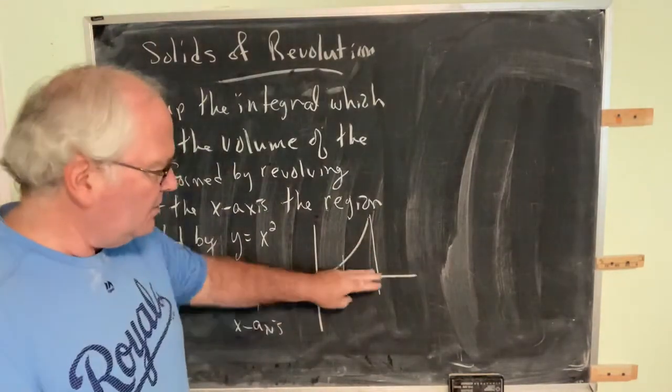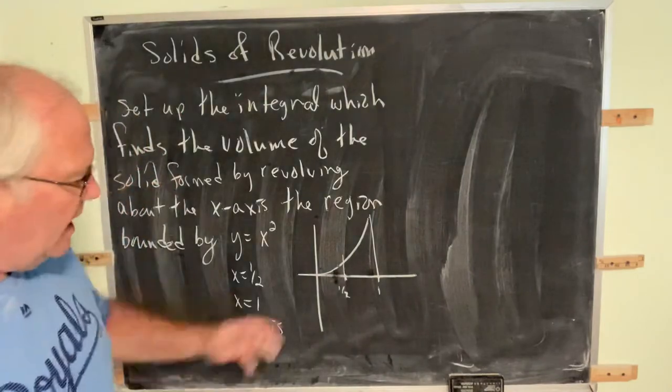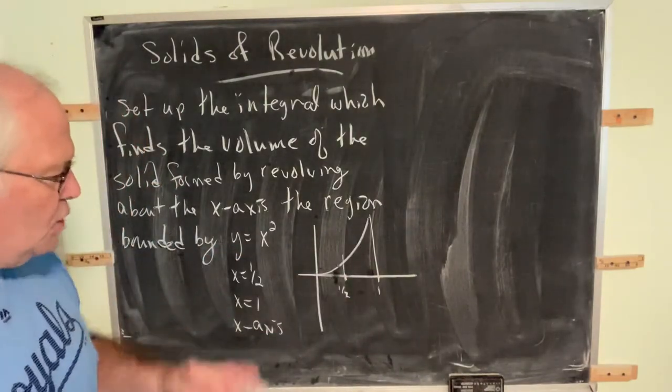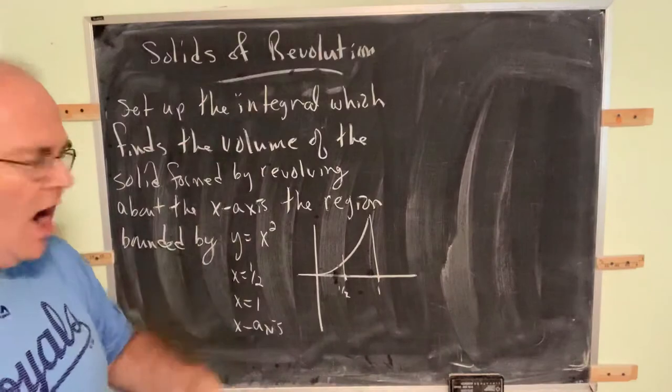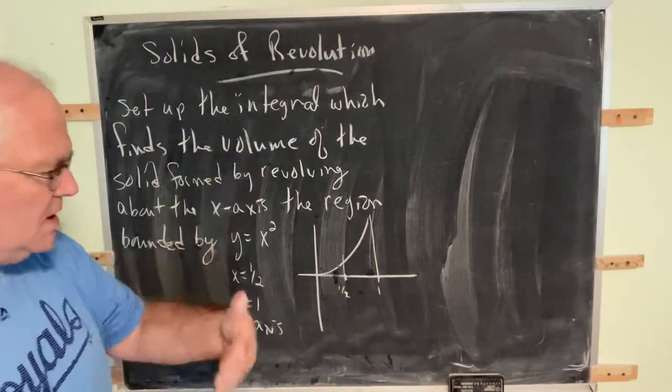So we'll take this region and rotate it about the x-axis. It's going to form something rather like a trumpet horn that's been cut off, or a trombone horn that's been cut off.